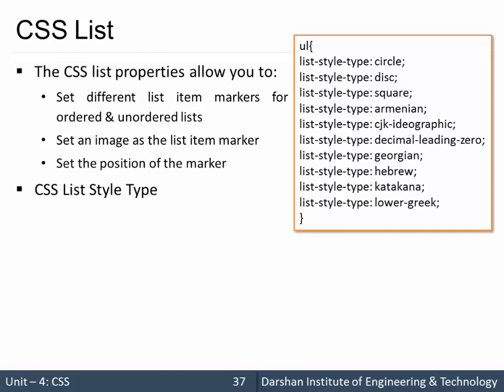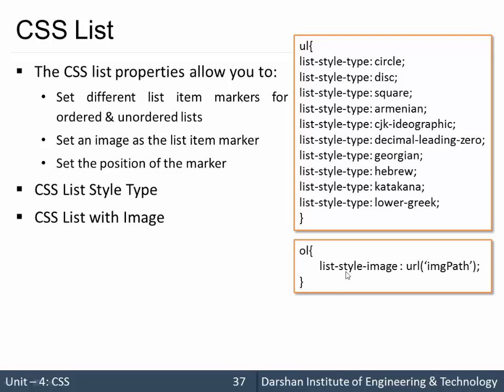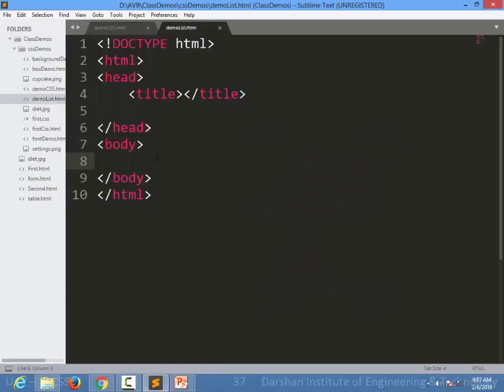Next, we can also set an image as a marker in CSS. For that, we have the property list-style-image. Inside a url() function, we can specify the path to the image. This way we can set an image as the marker instead of the default list marker types.